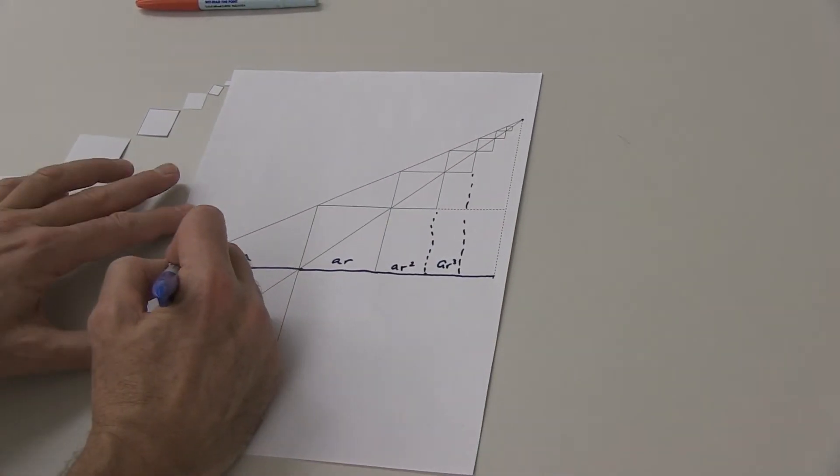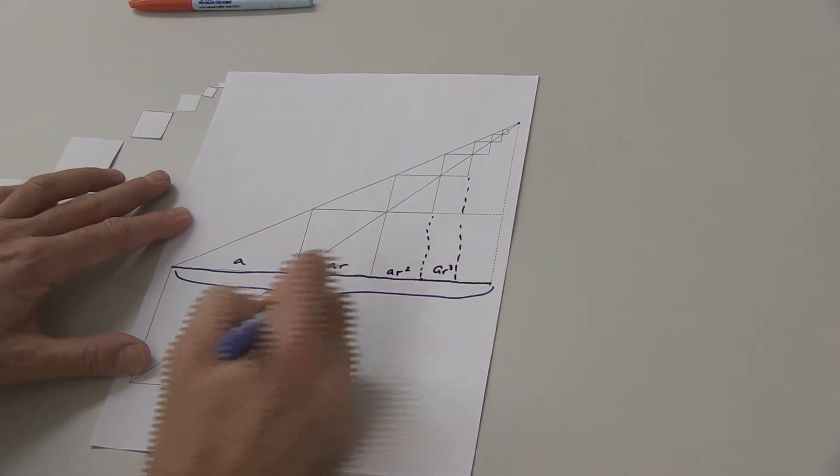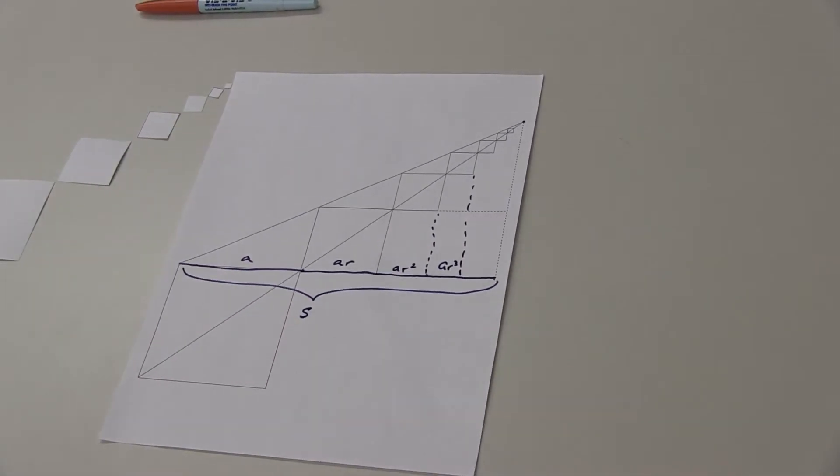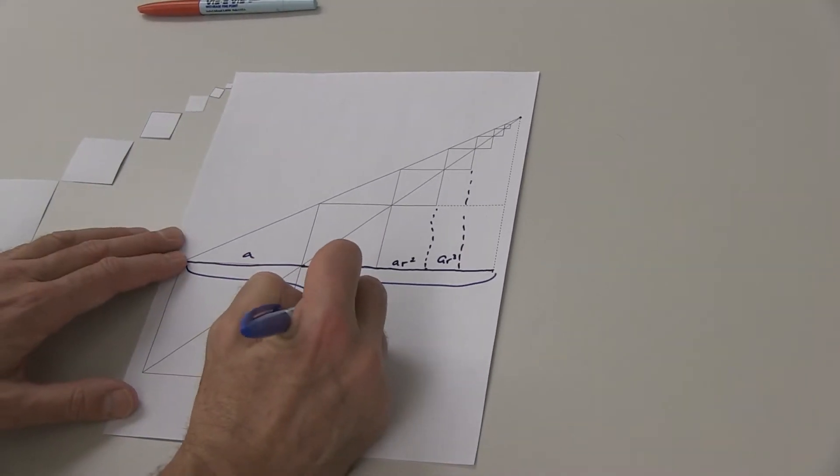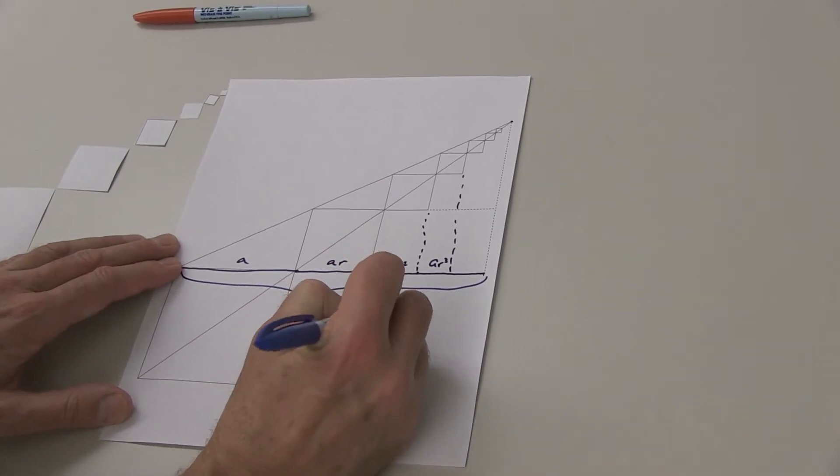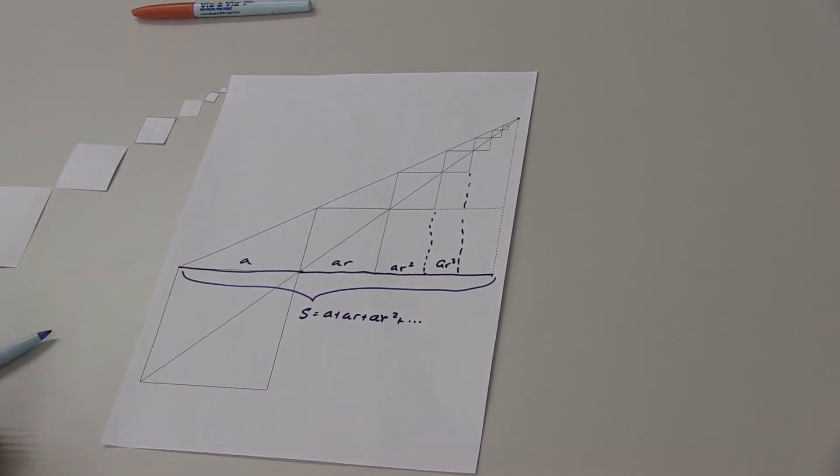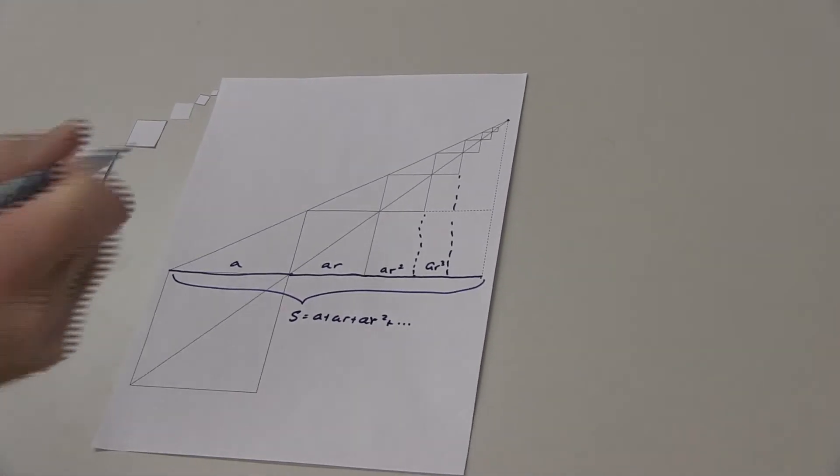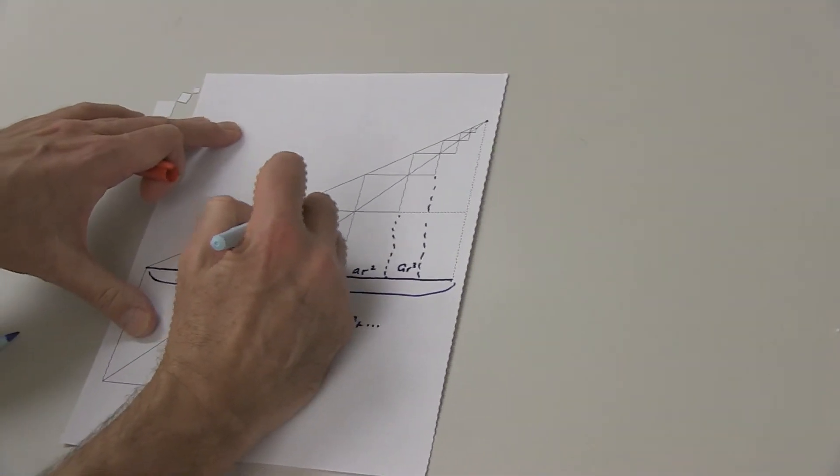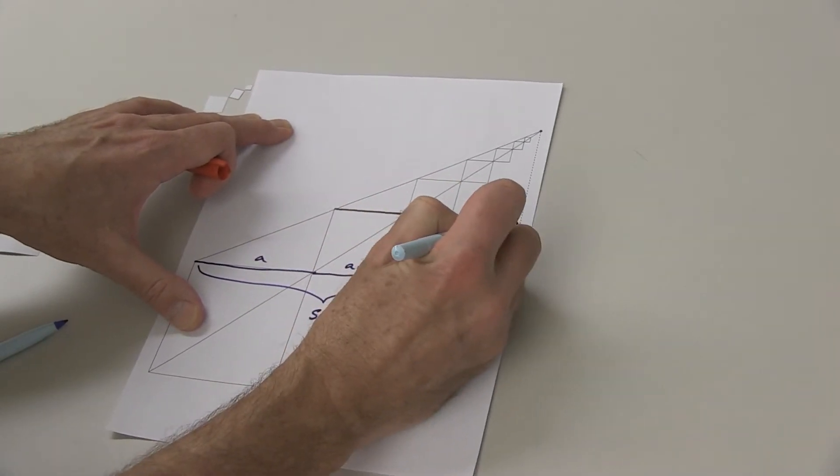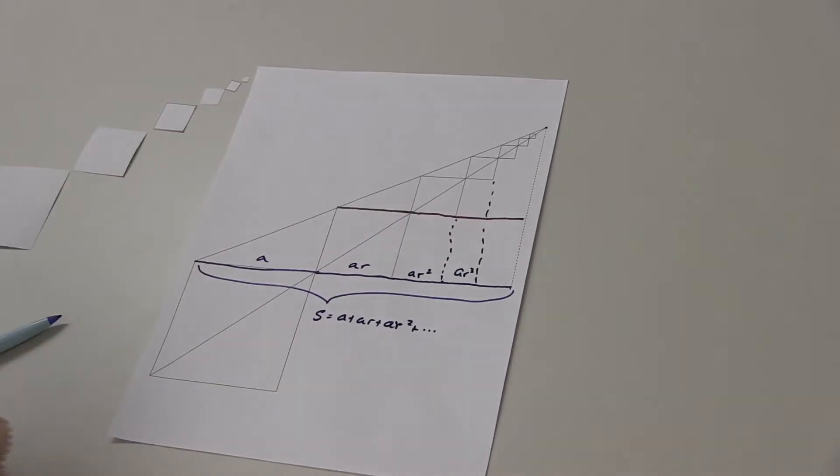This distance right here is the sum that we're interested in. We want to know what is A plus A*R plus A*R squared plus dot dot dot. How are we going to get there? You get there with a neat trick.